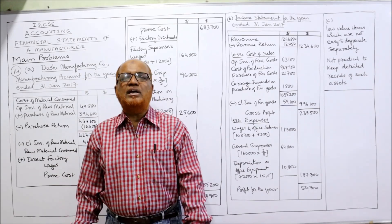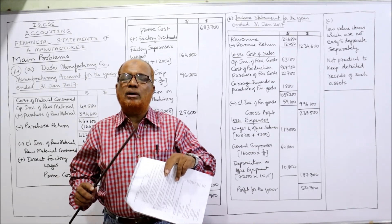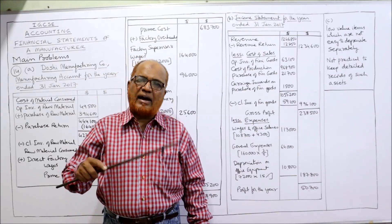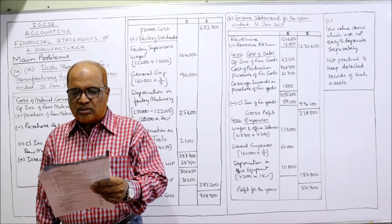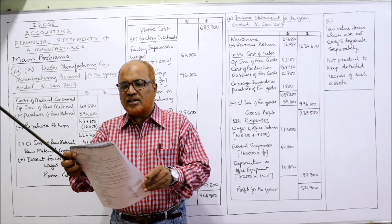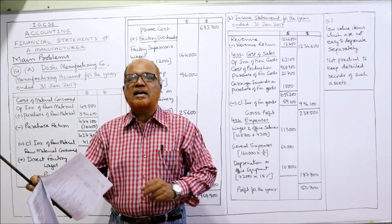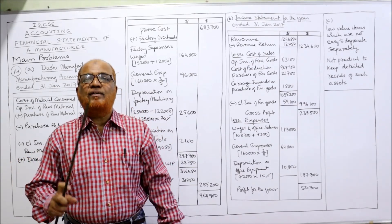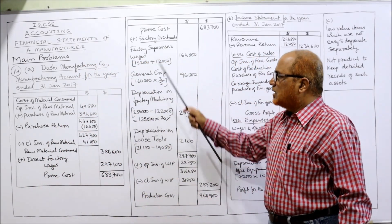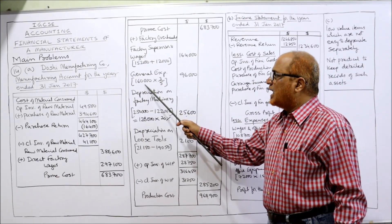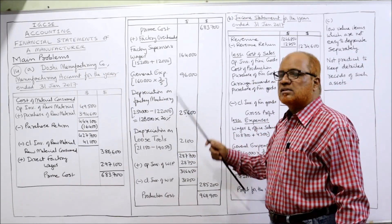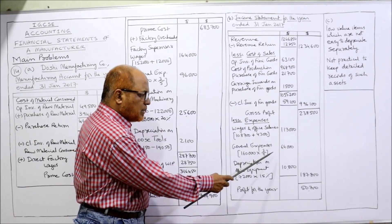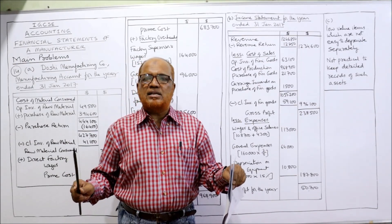Loose tools are revalued at the end of each financial year — no straight-line or reducing balance method is adopted; we simply compare beginning value and end value. The general expenses are to be apportioned: three-fifths to the factory and two-fifths to the office. General expenses from the trial balance are 1,60,000. Three-fifths to factory: 1,60,000 × 3/5 = 96,000. Two-fifths to office: 1,60,000 × 2/5 = 64,000.